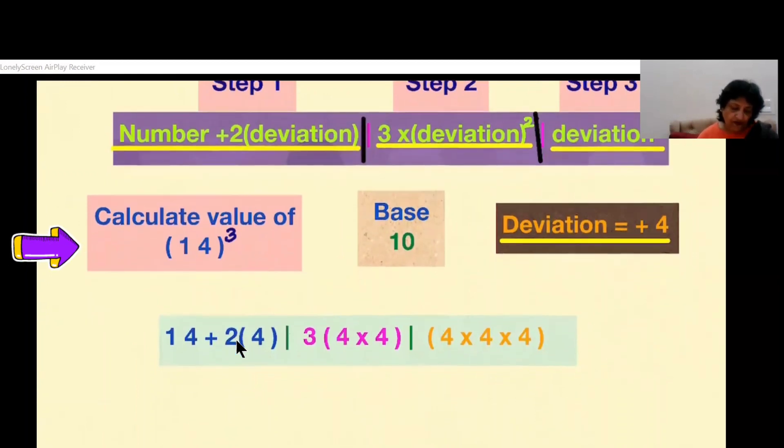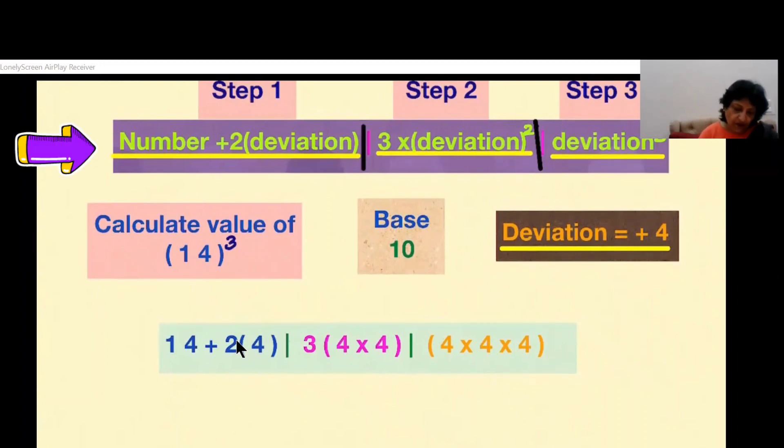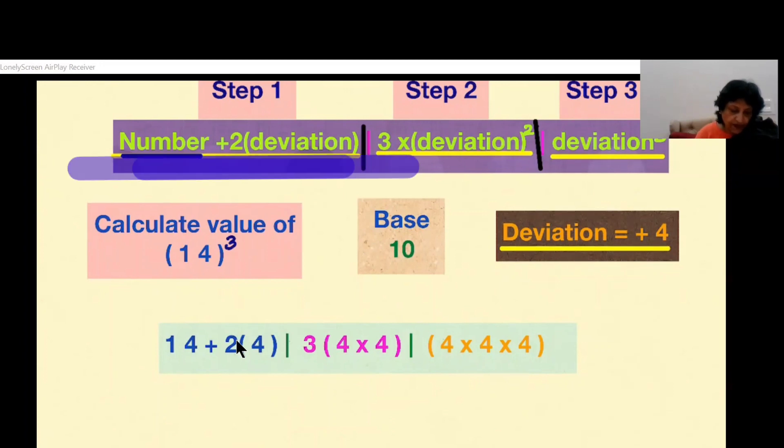But what is the formula? The formula is: whatever number you have, that number has to be added with twice the deviation. Deviation means the deviation of the number from its base. So if we have 10 as base and number is 14, the deviation is 4. So to the number we add two times the deviation. This is the first step.